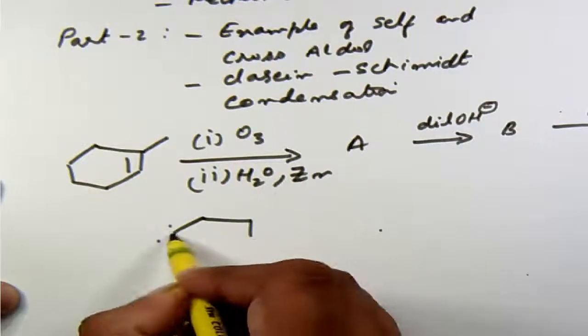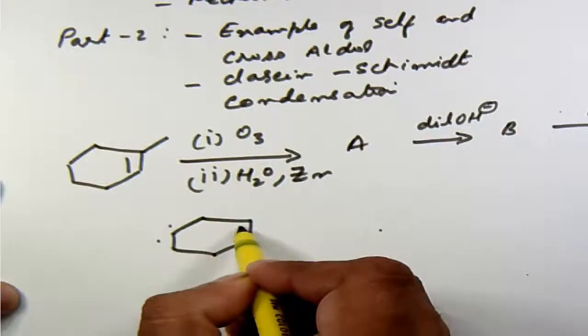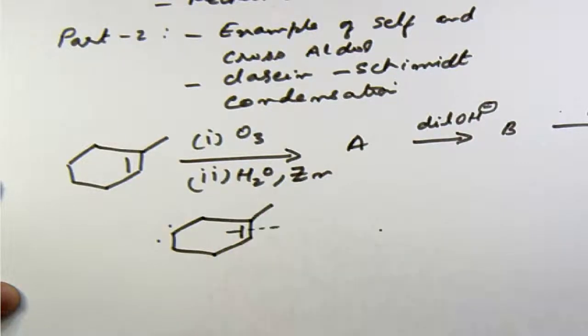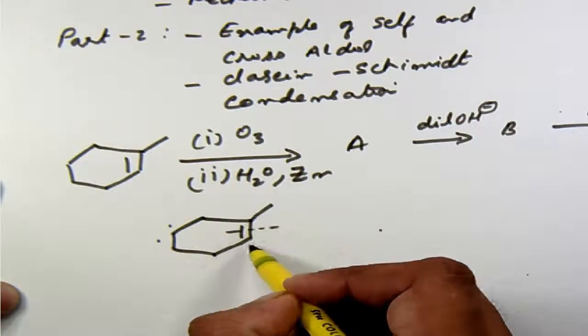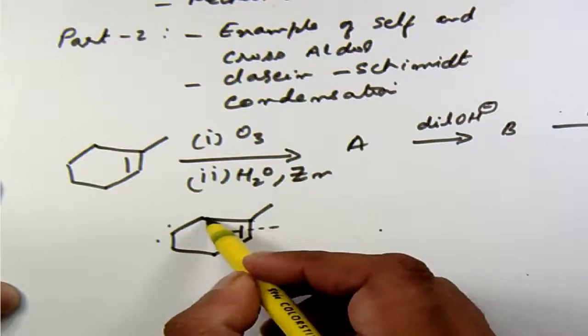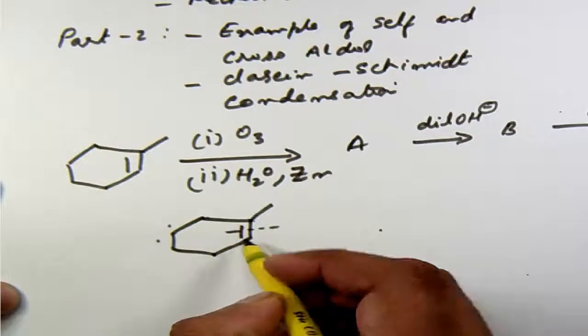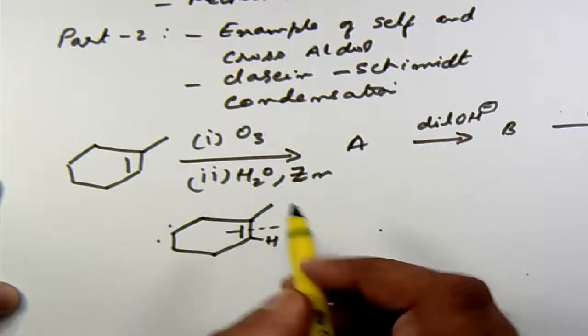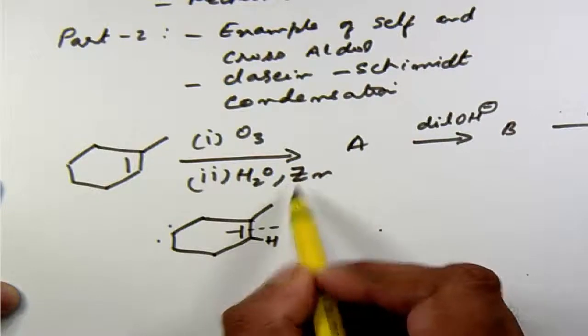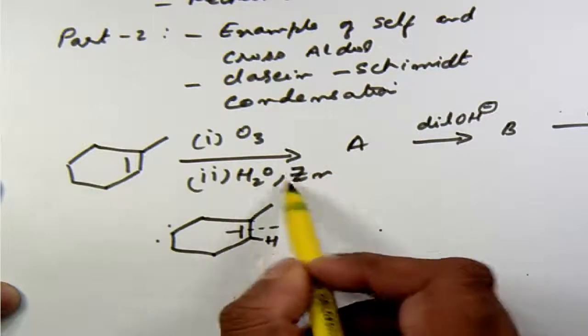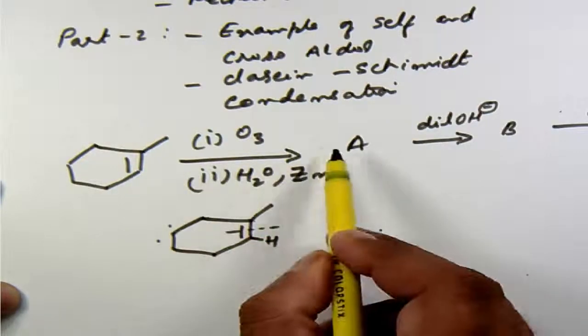You know that in ozonolysis we break the double bond, we break both the bonds completely and on both the carbons we have a double bond O. So this would become a ketone because it has got two alkyl groups. This is going to become an aldehyde because it has got one hydrogen and because we are doing reductive ozonolysis the aldehyde remains as the aldehyde.